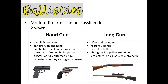We can get into a lot of detail, but for forensics we won't. Both the rifle and the shotgun have long barrels, and these long barrels create unique rifling marks on bullets as those bullets are propelled through the barrel. Handguns — pistols and revolvers — have shorter barrels, but these barrels also create unique rifling patterns on bullets, and that's a major part of today's lesson.